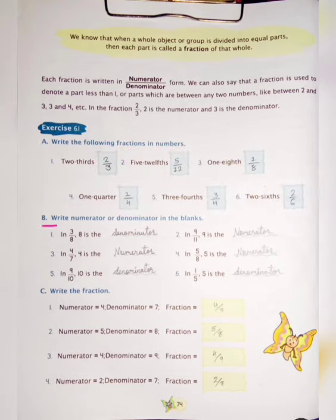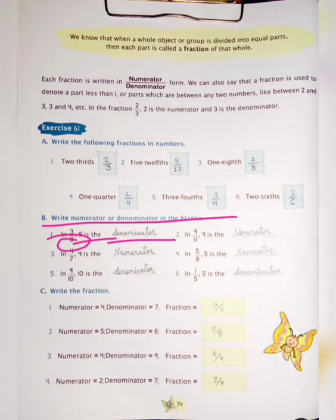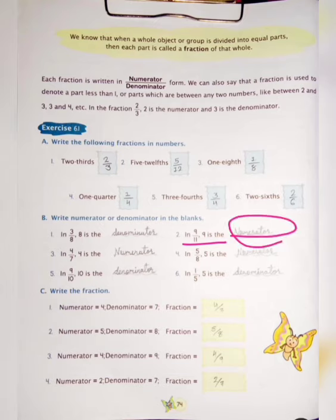Now Question B: Write numerator or denominator in the blanks. In 3 upon 8, so 8 is the denominator because 8 is under the 3. Next, in 9 upon 11, so 9 is numerator. Number 3: 4 upon 7, so 4 is numerator. Number 4: 5 upon 8, 5 is numerator. In 9 upon 10, 10 is denominator. Number 6: in 1 upon 5, 5 is the denominator.